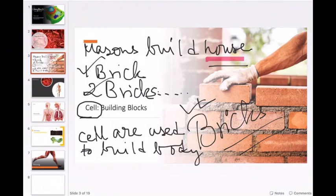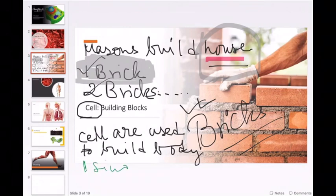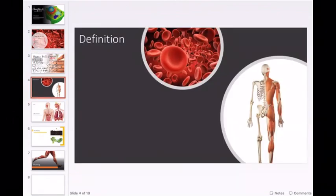Just as building a house starts with one single brick, similarly building our body or the body of any living thing starts with one single cell. This is the similarity between a mason building a structure and the building of our body or any living thing's body. So let's see what could be the definition of a cell.